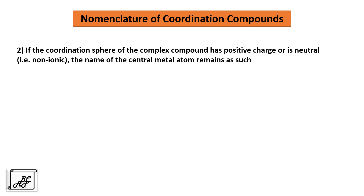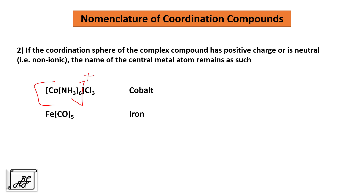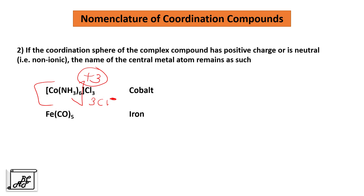When the coordination sphere has a positive charge, or is neutral (non-ionic), the name of the central metal atom remains as such. For example, in cobalt hexaammine trichloride, the central metal atom is written as cobalt. In the second example with iron, we write it as iron. This is because the coordination sphere has a positive charge — there are three chloride ions outside giving a -3 charge, so the coordination sphere has a +3 charge — and in such cases the name of the central metal atom is written as it is. The same applies to neutral compounds.